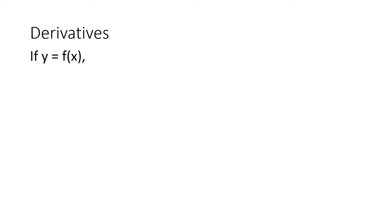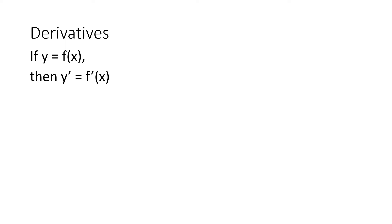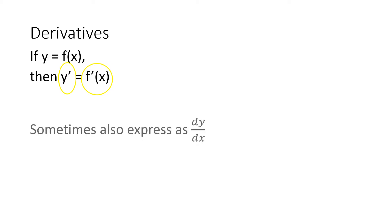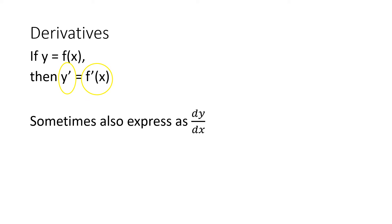In calculus, we usually use the expression f(x) instead of y, but basically they're just the same. When it comes to their derivatives, the derivative of y is y prime, or we say the derivative of f(x) is f prime of x. This is how we express the derivative of y and the derivative of our function. Sometimes it is also expressed as dy over dx. All of these expressions pertain to the first derivative of the function.